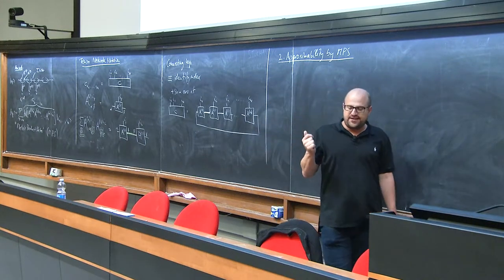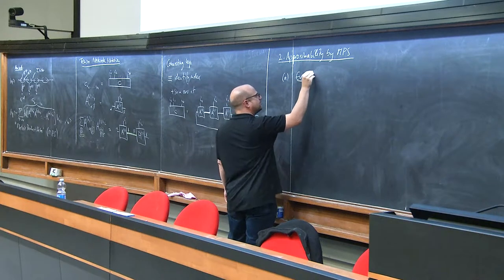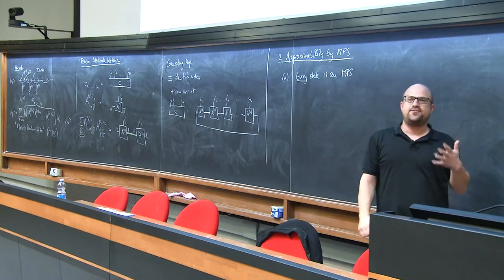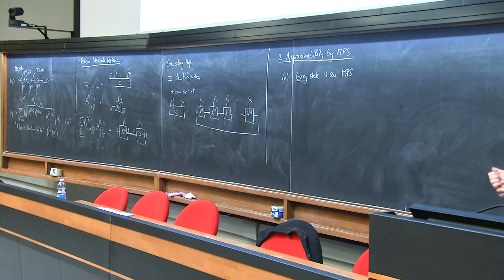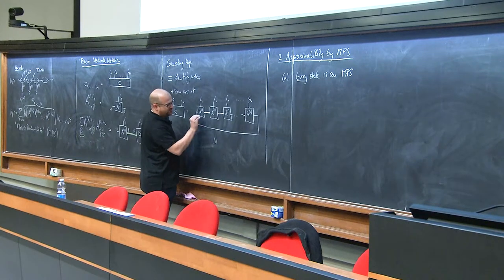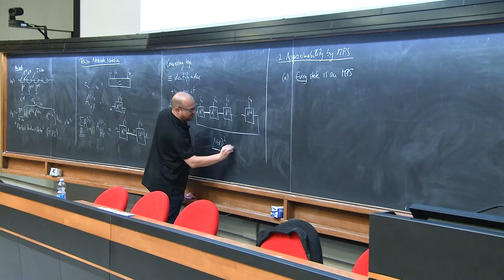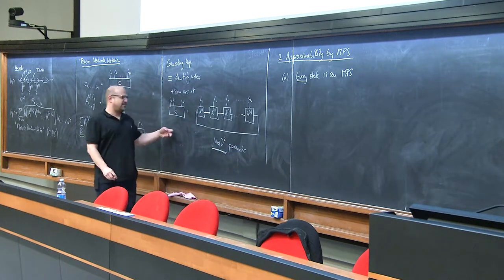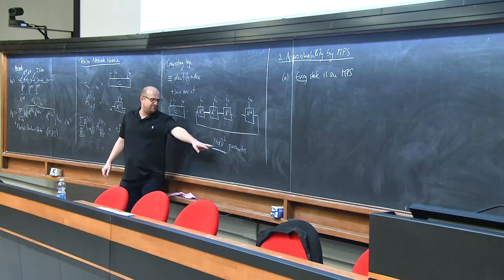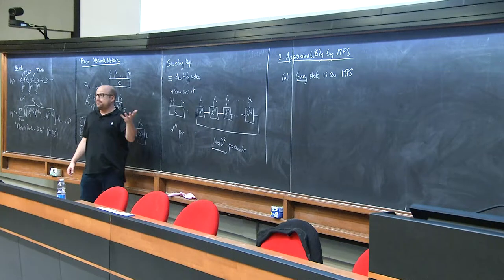This construction has enough descriptive power to describe any state, if we're willing to add enough parameters. By parameter counting: MPS has n times d times D² parameters, while a general state has d^n parameters. To describe any state, we may need D to be exponentially large in n — but at least in principle, we can represent any state.